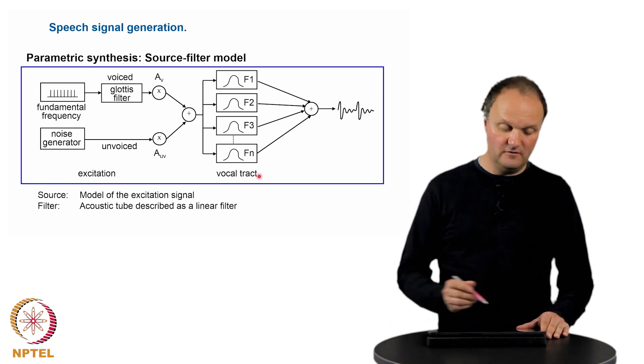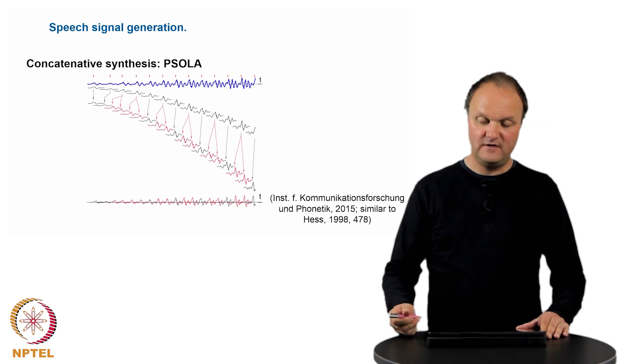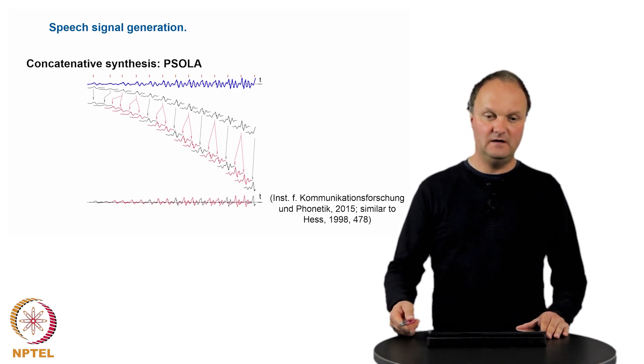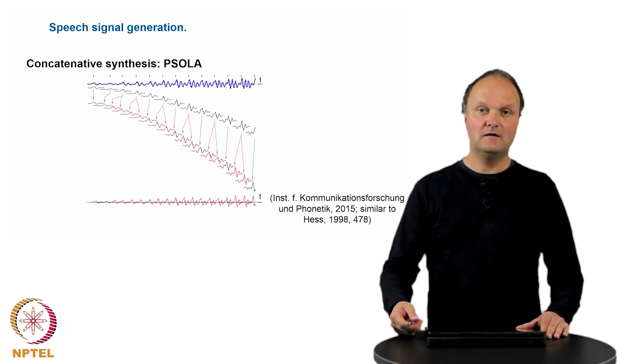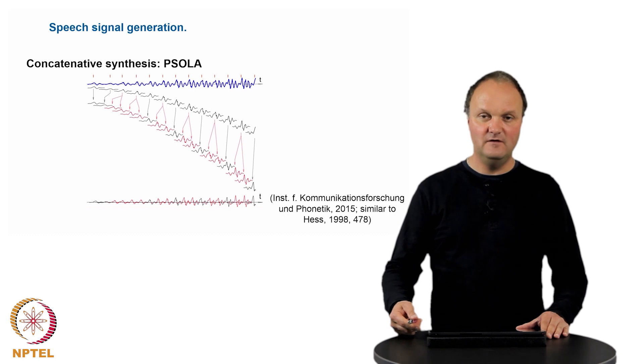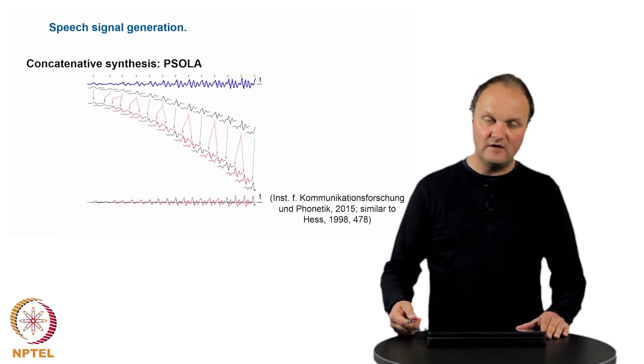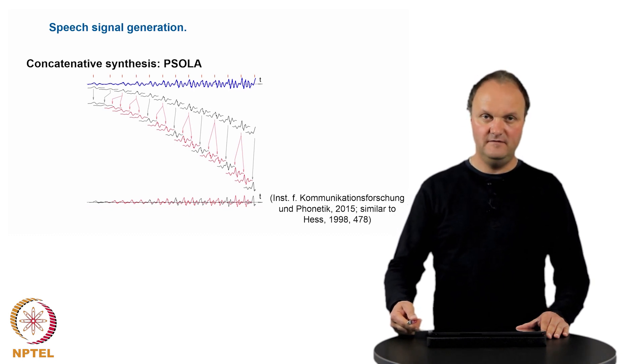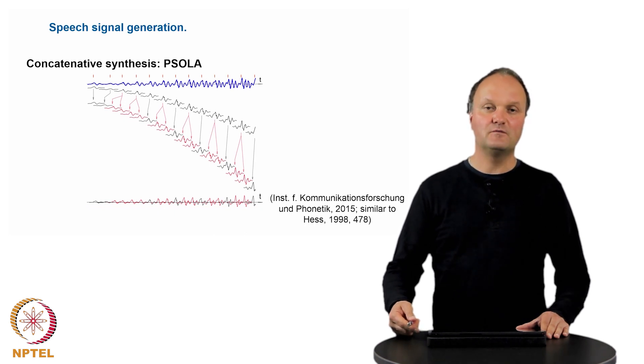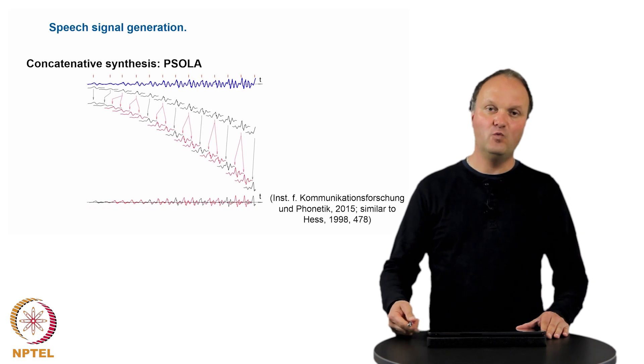In order to deal with that problem, people have thought of recording speech signals from real speakers, from natural speakers, and concatenating them in a way which allows still the manipulation of different prosodic characteristics, like the amplitude, the fundamental frequency, and the length of the individual sounds, but still using natural speech, which should sound more natural than the one produced with the source filter model.